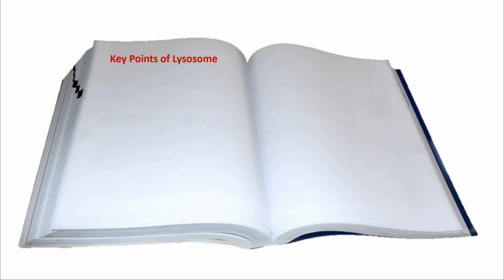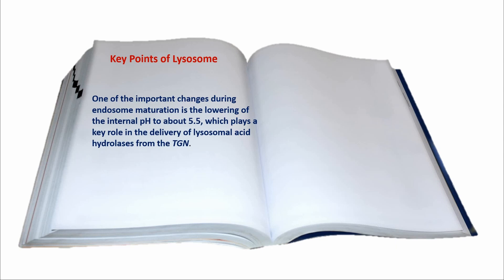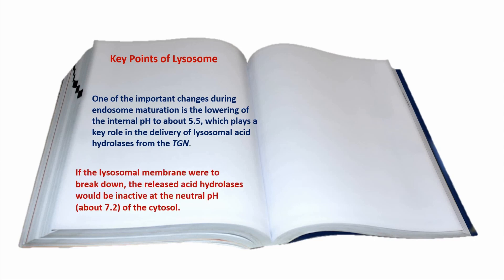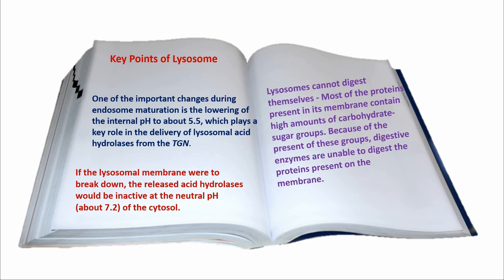Key points of lysosomes. One of the important changes during endosome maturation is the lowering of the internal pH to about 5.5, which plays a key role in the delivery of lysosomal acid hydrolases from the TGN. If the lysosomal membrane were to break down, the released acid hydrolases would be inactive at the neutral pH of the cytosol. Lysosomes cannot digest themselves. Most proteins present in the membrane contain a high amount of carbohydrate. Because of the presence of these carbohydrate groups, digestive enzymes are unable to digest the proteins present on the membrane.